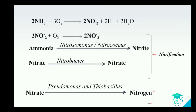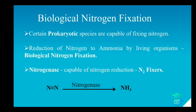In the next step, nitrate is reduced to nitrogen gas and this conversion step is accomplished with the help of microorganisms known as Pseudomonas and Thiobacillus. In this conversion step, the nitrate is reduced to nitrogen and the process is known as denitrification.